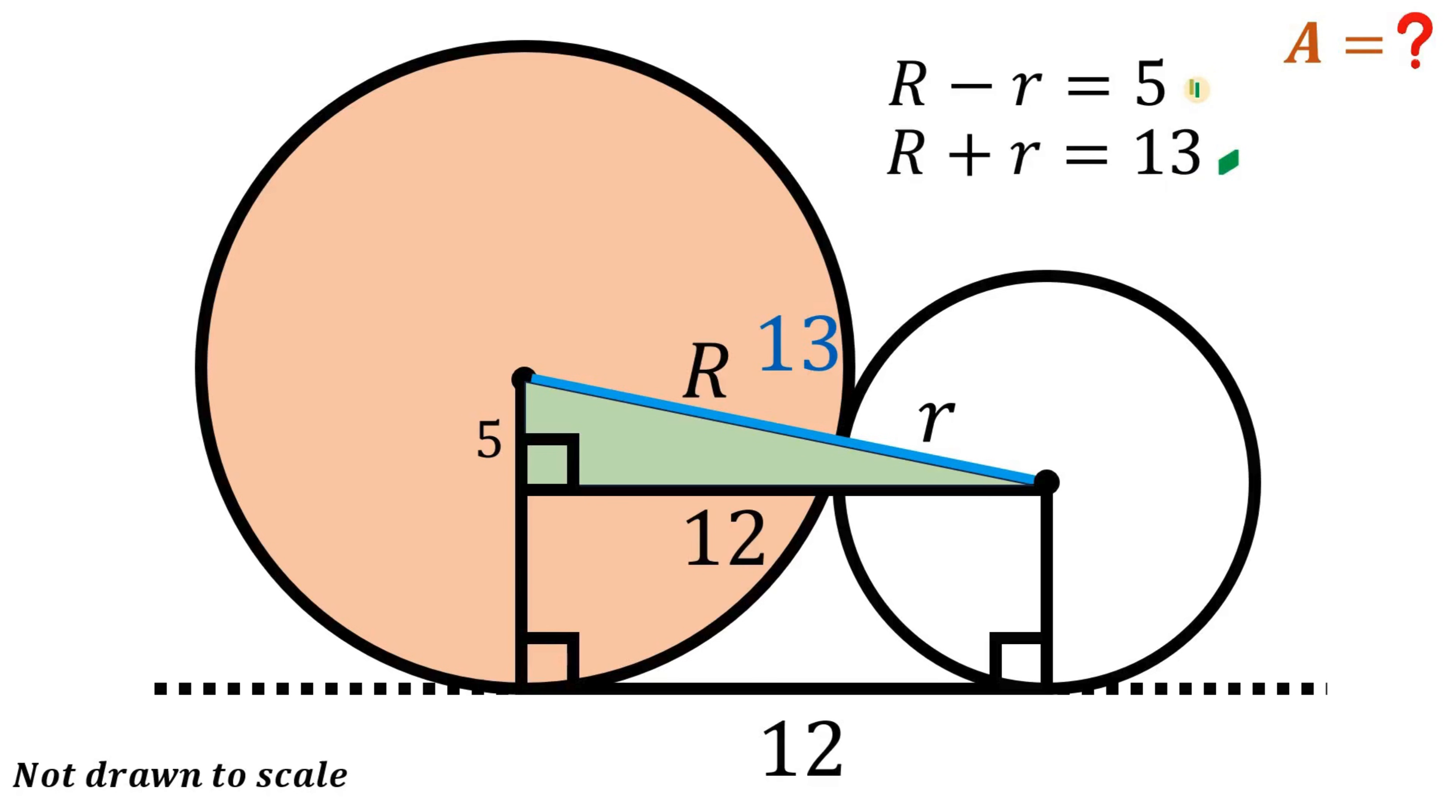And using these two equations, we can now get the value of this capital R. If we add these two equations, we can eliminate negative r and positive r. So this becomes two times capital R equals 18. Divide both sides by two, we get that capital R equals 9.